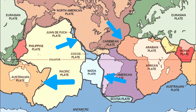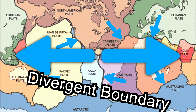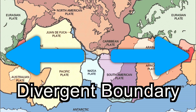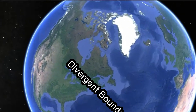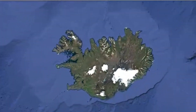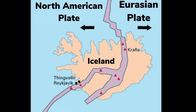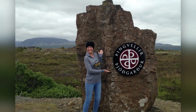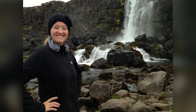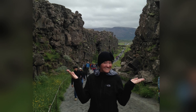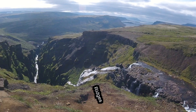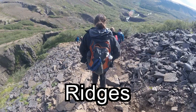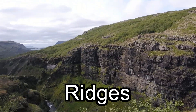At the borders of these plates there are different types of boundaries. Some plates move away from each other — this is called a divergent boundary. One example of a divergent boundary can be found in the country of Iceland, where the North American and Eurasian plates border. Along this border is Thingvellir National Park. Typically at a divergent plate boundary you can find ridges as the exposed magma comes through between the plates and hardens.